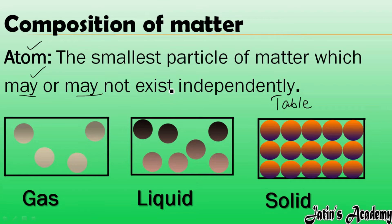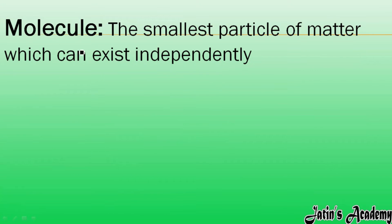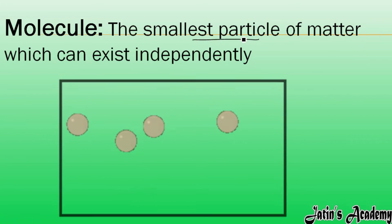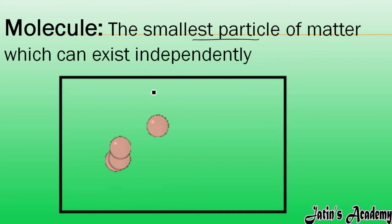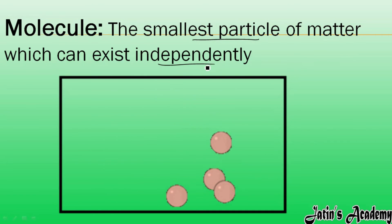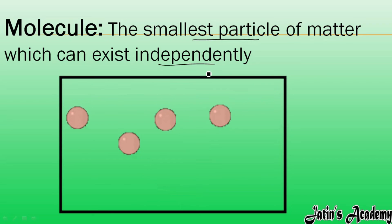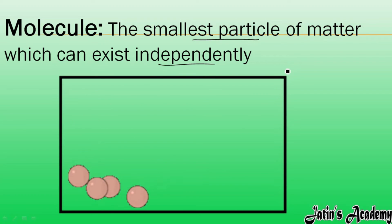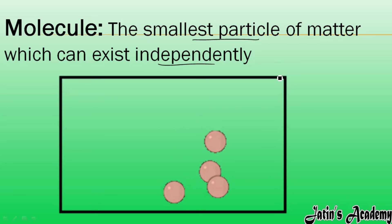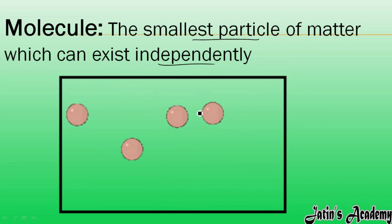The second composition of matter we are going to study is the molecule. A molecule is also a smallest particle of matter, but molecules can exist independently. It is not obvious that they are going to combine with any other particles — molecules can exist independently.